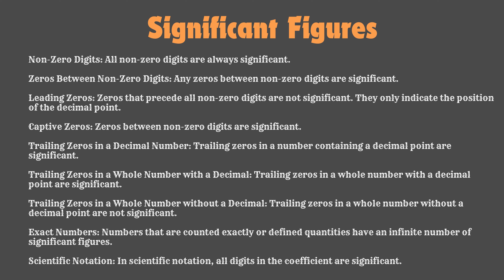Significant Figures. Significant figures are used to express the precision of a measurement. They include all the known digits plus one estimated digit. The rules for significant figures help maintain accuracy in calculations. For instance, when multiplying or dividing, the result should have the same number of significant figures as the measurement with the fewest significant figures. When adding or subtracting, the result should have the same number of decimal places as the measurement with the fewest decimal places.